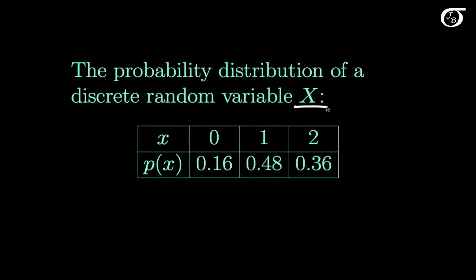Capital X represents the random variable. Lowercase x represents the values the random variable can take on. So here our random variable X can take on the values 0, 1, or 2, and it takes those values on with these probabilities. One of the points of interest for us might be in finding the mean and the variance of the random variable X.